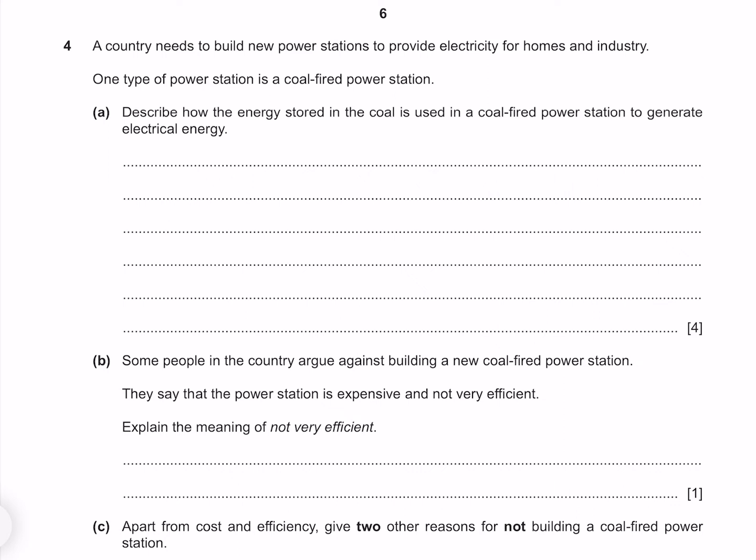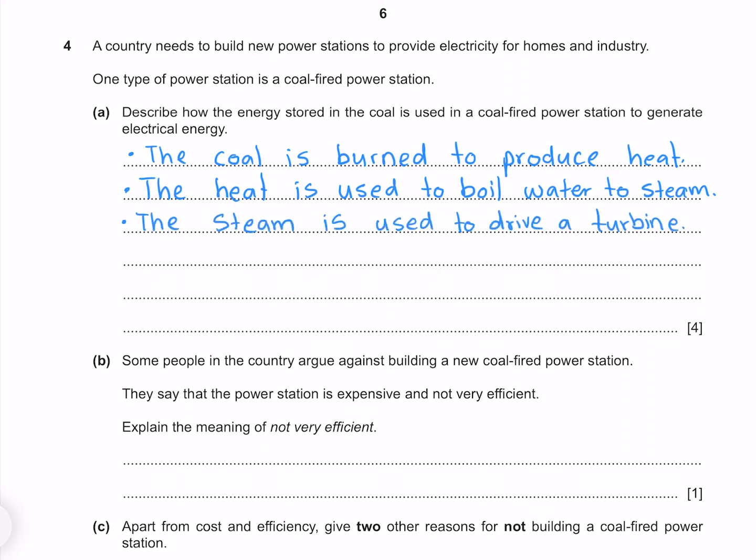A country needs to build new power stations to provide electricity for homes and industry. One type of power station is a coal-fired power station. Describe how the energy stored in the coal is used in a coal-fired power station to generate electrical energy. Let's break this down step by step. The coal is burned to produce heat. The heat is used to boil water to steam. The steam is used to drive a turbine, and the turbine drives an electric generator.